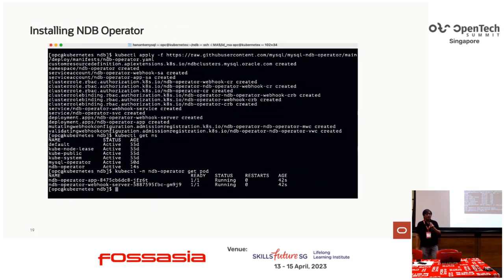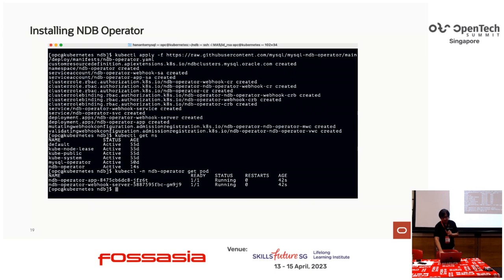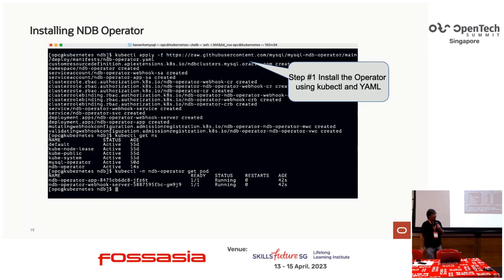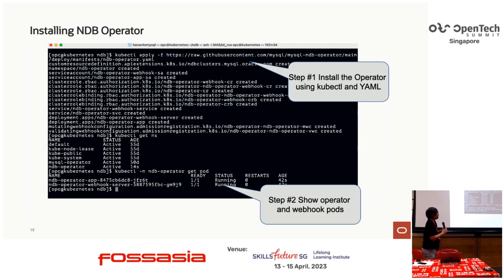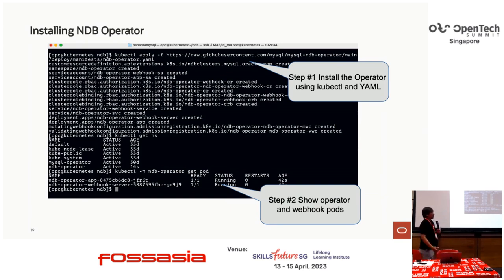To install the NDB operator, assuming you have a Kubernetes cluster running — whether Minikube, Rancher, or anything else — you can install it in two ways: using Helm, or using kubectl and YAML. Here is the kubectl and YAML approach. Once the YAML is executed using kubectl, you will have the NDB operator running — two parts: the NDB operator itself and the webhook server to handle various NDB cluster containers.